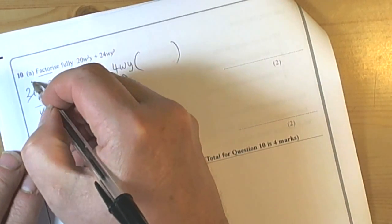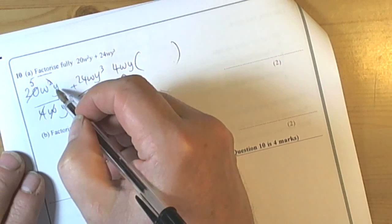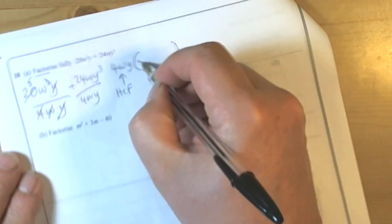So we've got 20 divided by 4 is 5. W squared divide by W is W, and Y divide by Y cancels to 1, so we're left here with 5 and a W.